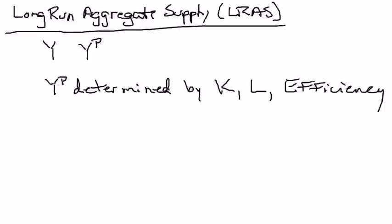Hi, everyone. In this short little video, I want to talk about the long-run aggregate supply curve. Now, in the long run, real GDP, Y, will equal potential GDP.